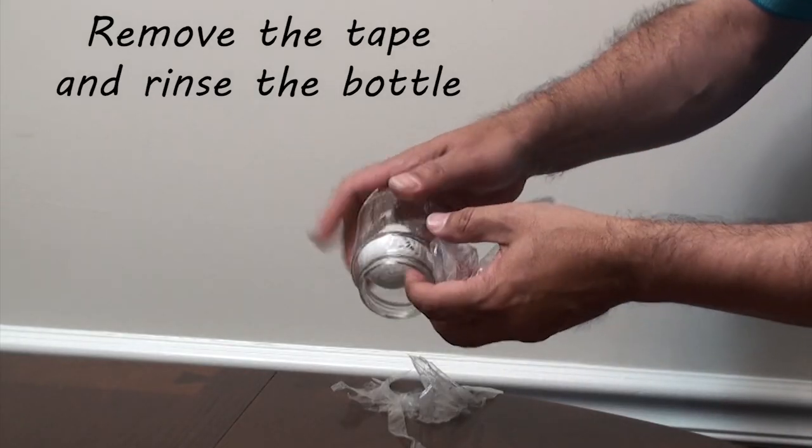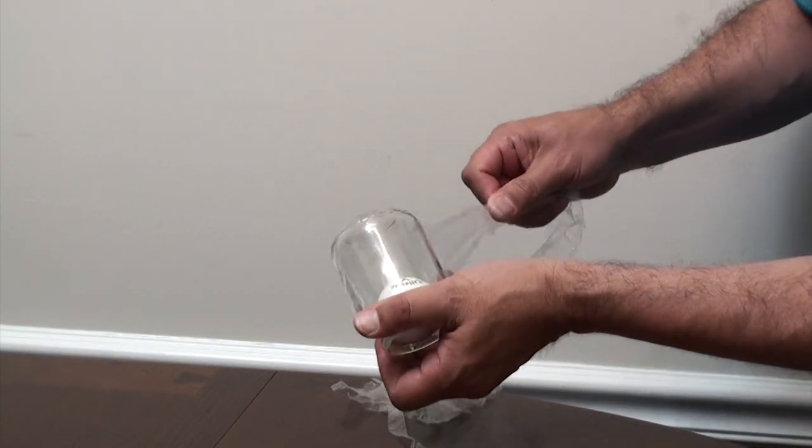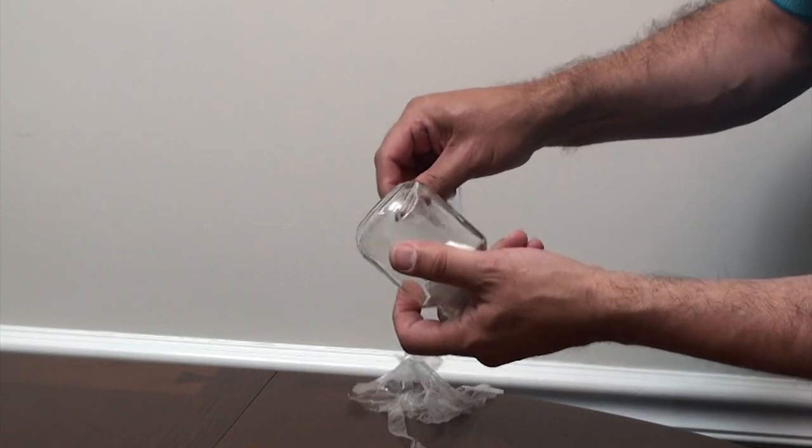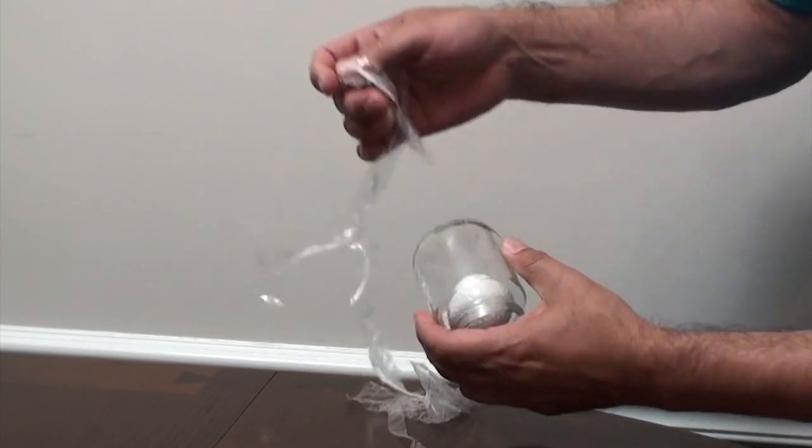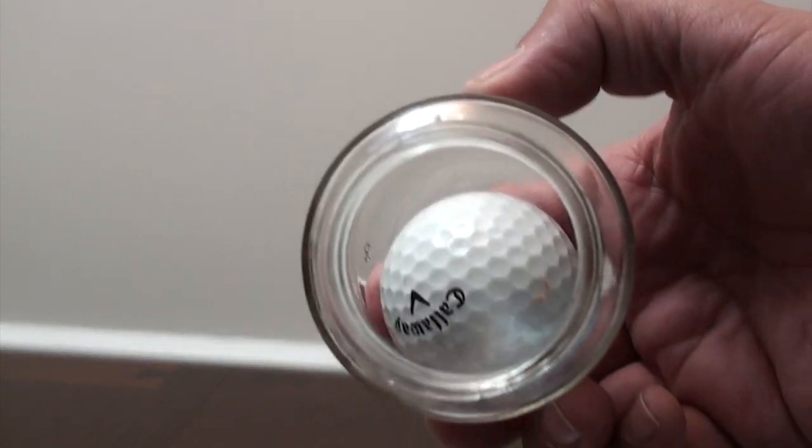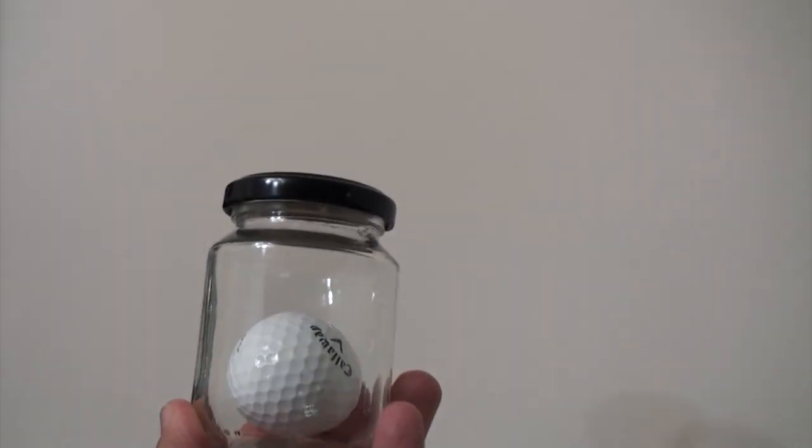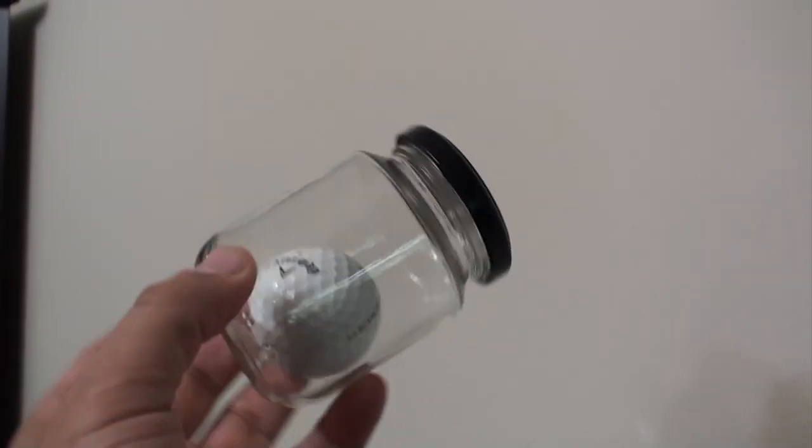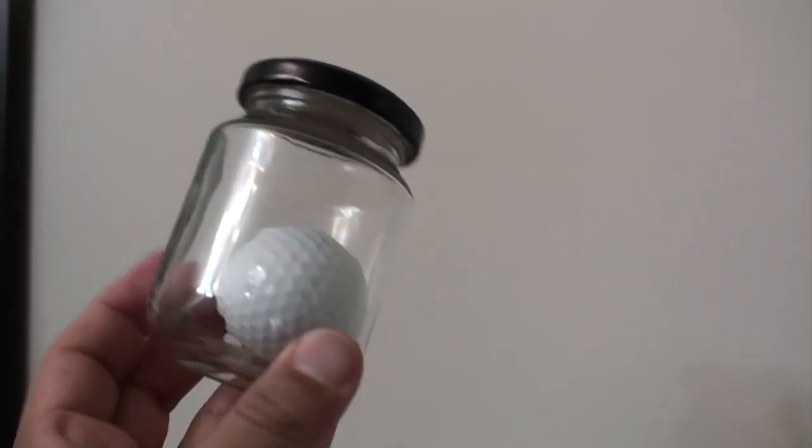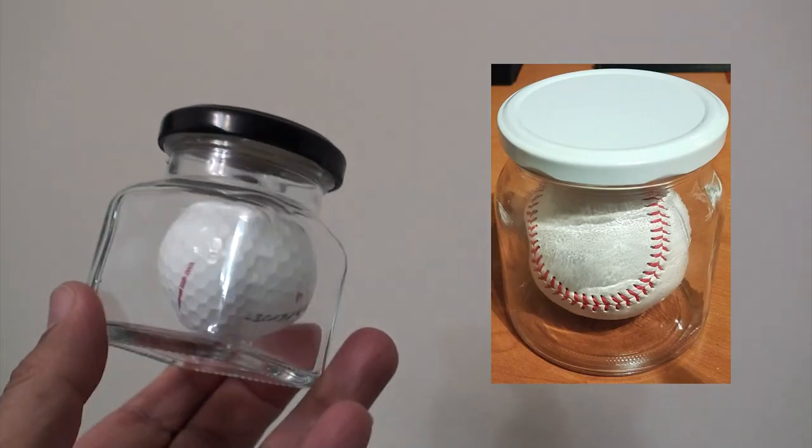Finally, remove the tape and rinse the bottle. For these impossible bottles, I recommend the use of golf balls with lower numbers because they are softer. Congratulations, you have another impossible bottle! You can use the same technique to have other balls inside bigger bottles.